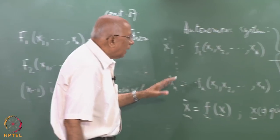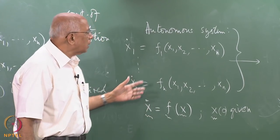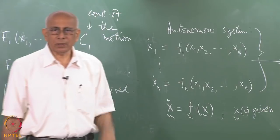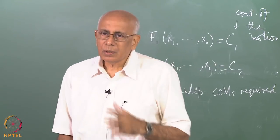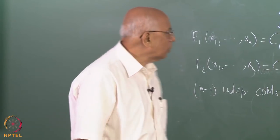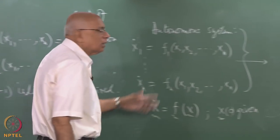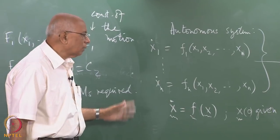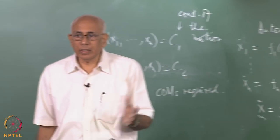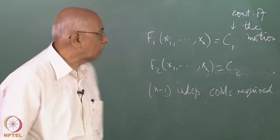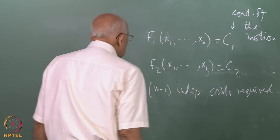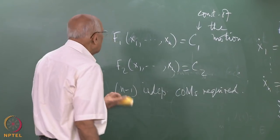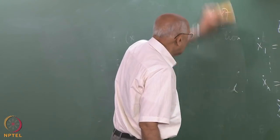The existence of a constant of the motion generally implies a symmetry in the equations. The more symmetry a system has, the more likely it is to have constants of the motion. For an arbitrary generic system with no special symmetry, there may be no constants of the motion available. This is why integrability is very rare, unlike local solvability, which is common.